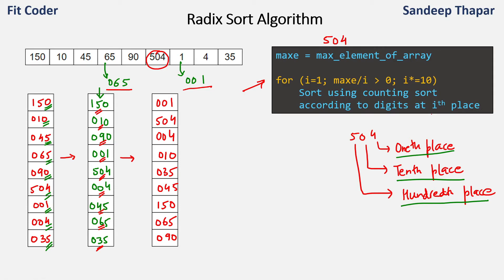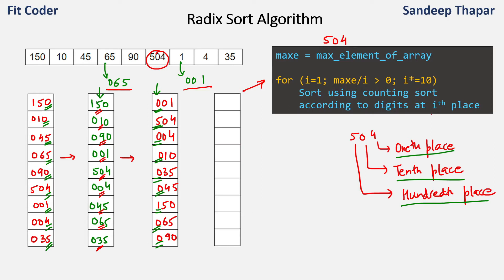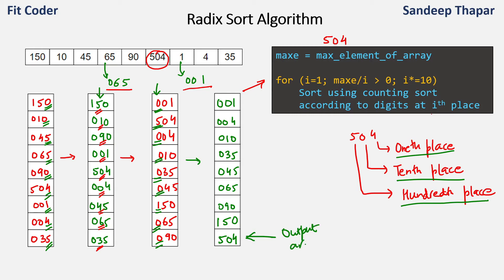In the next iteration, we sort the digits using the 100s place, highlighted in green. After sorting by the 100s place we get: 001, 004, 010, 035, 045, 065, 090, 150, and 504. We have now sorted at all positions — 1s, 10s, and 100s place — the loop ends, and this is our output array: 1, 4, 10, 35, 45, 65, 90, 150, 504. In each iteration we sort the digits at a particular position, and once all positions are sorted, the whole array is sorted.